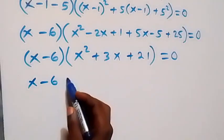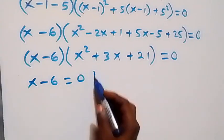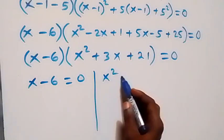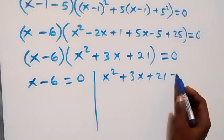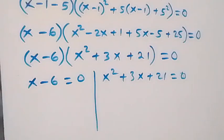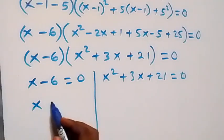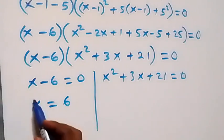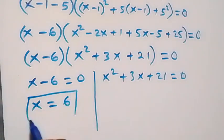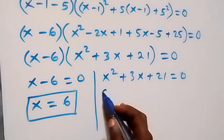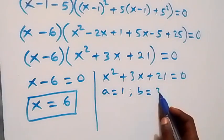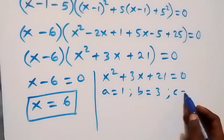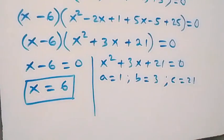Again we have two cases: x minus 6 equals to 0, or x squared plus 3x plus 21 equals to 0. From the first, x equals 6. Solving the quadratic: a equals 1, b equals 3, c equals 21.